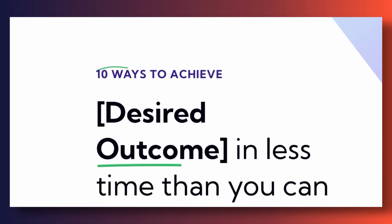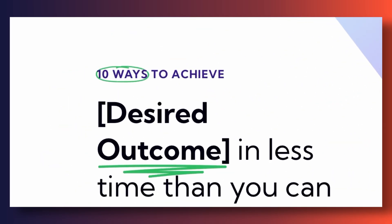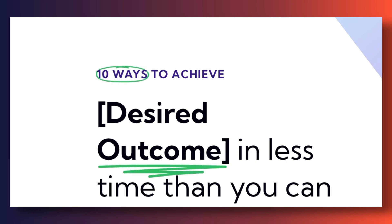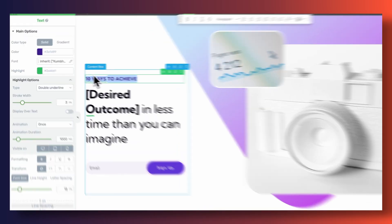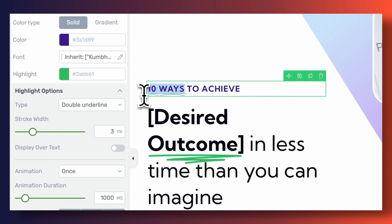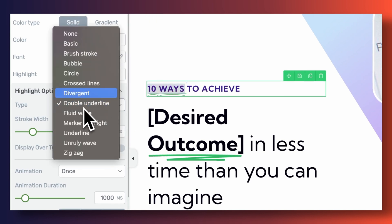We've introduced an all new way of highlighting strings of text and animating them in a variety of different ways. There is a new highlight option setting that you can toggle on any text element, and this new menu allows you to customize your highlight effects in different ways.